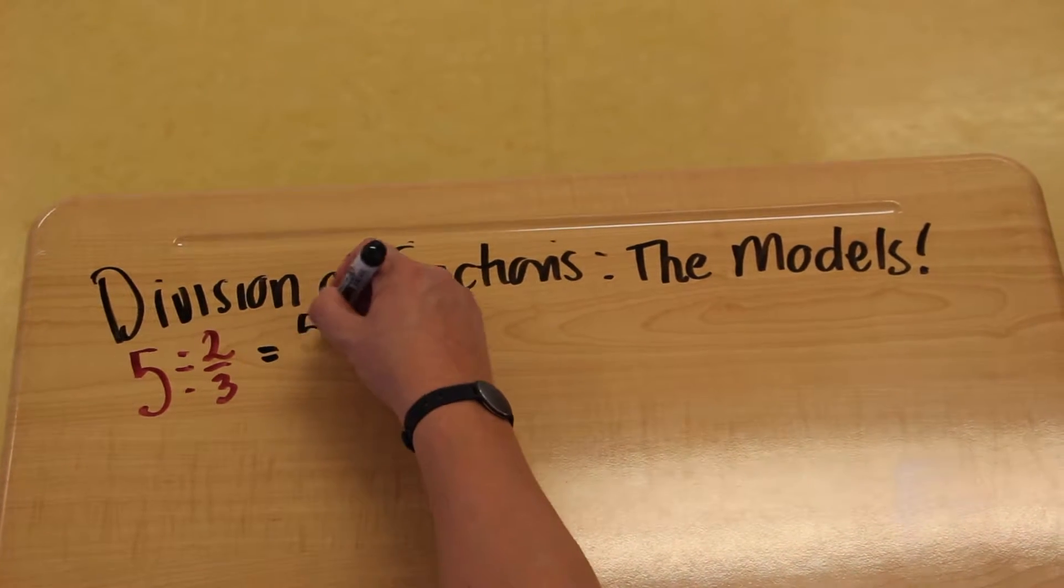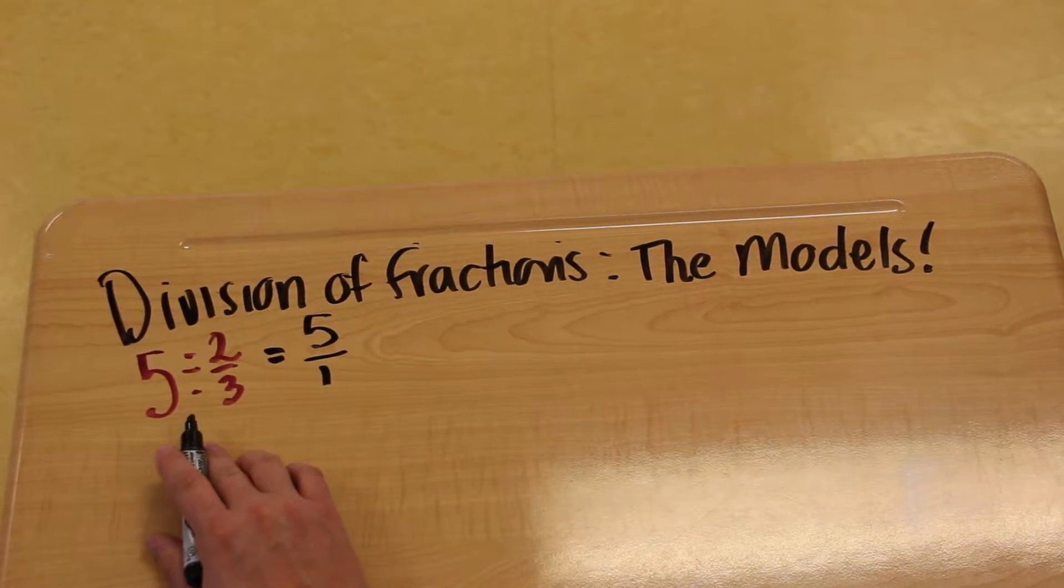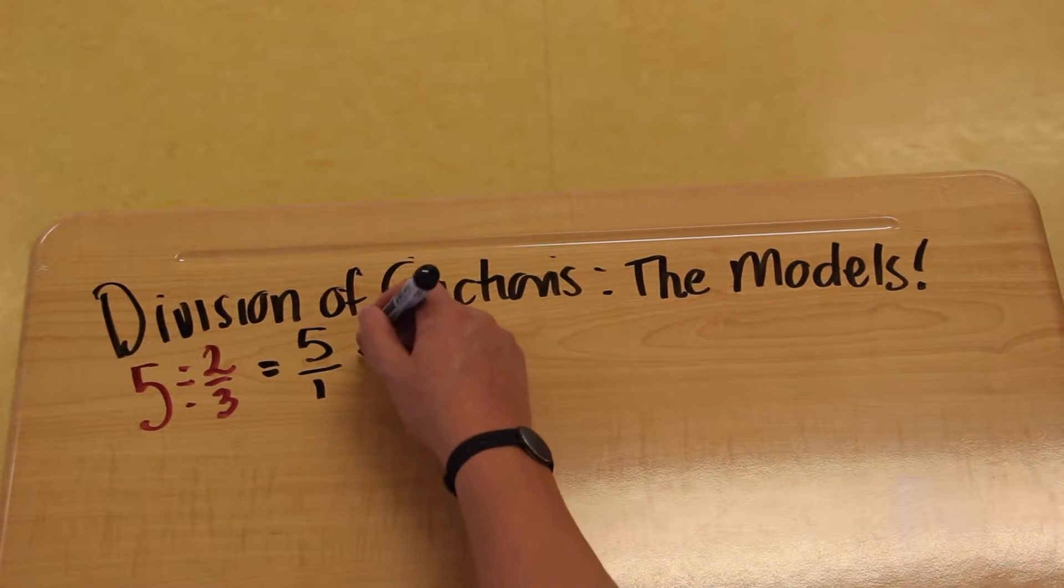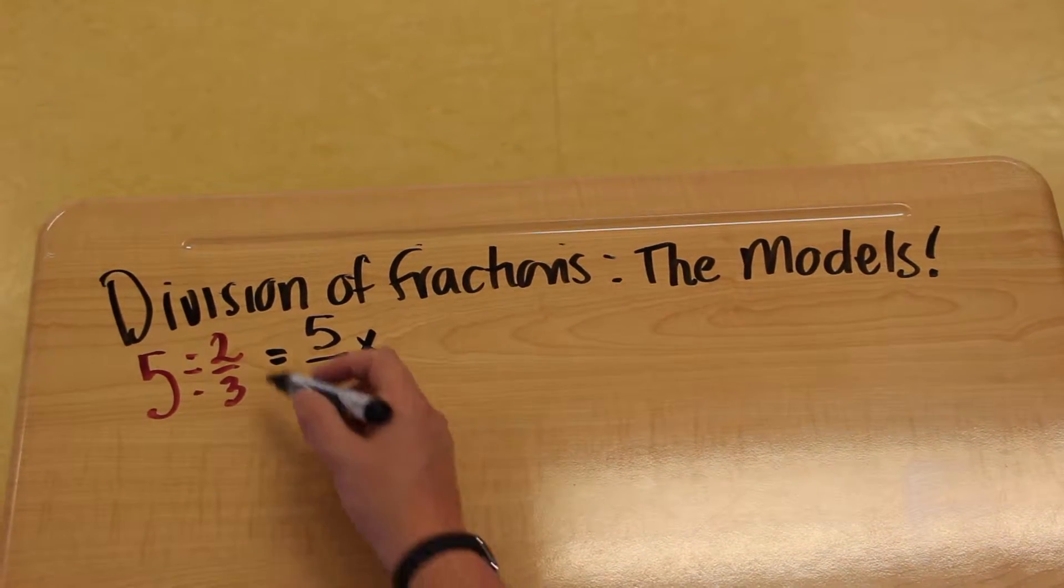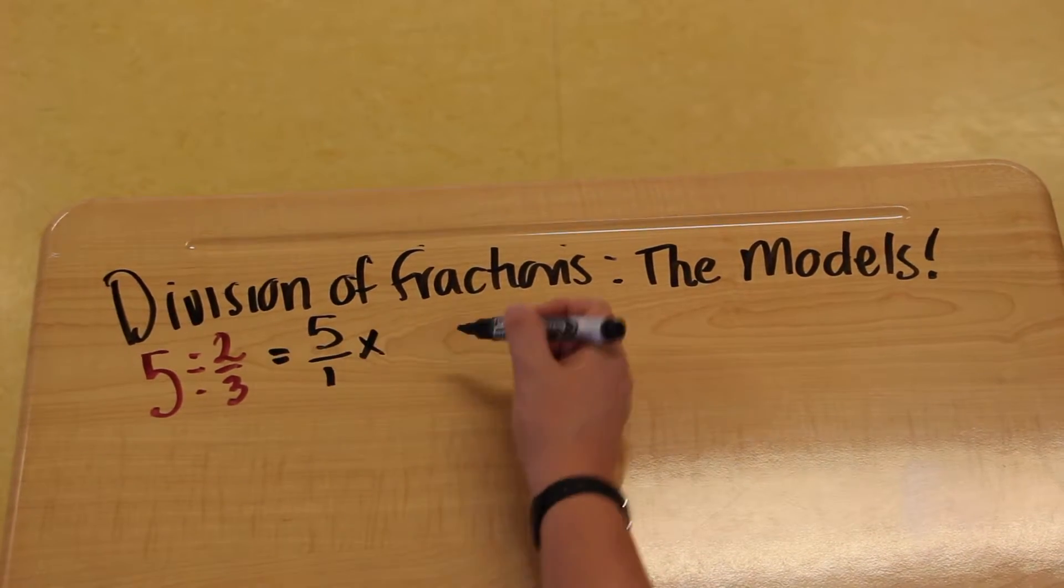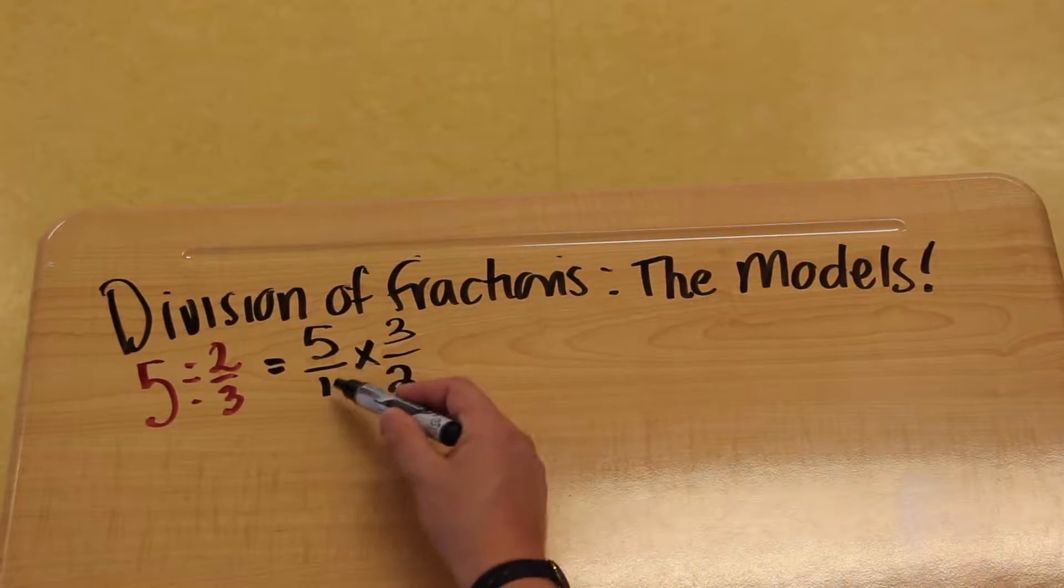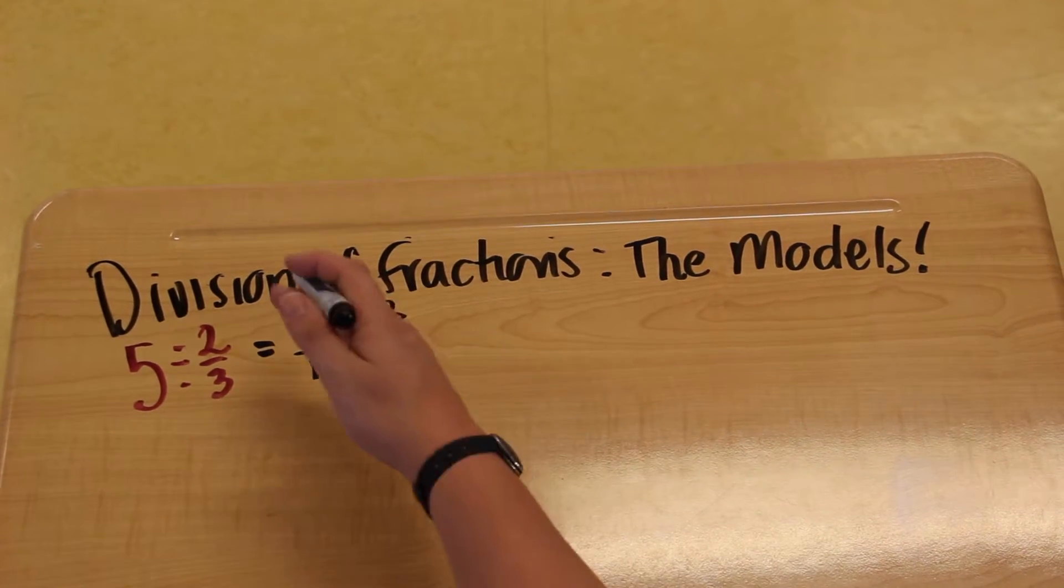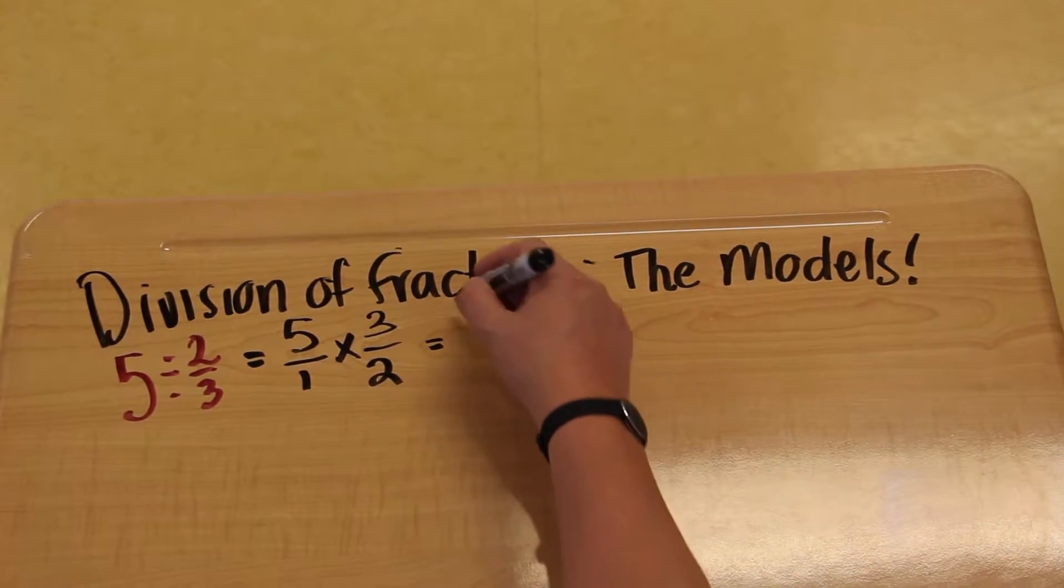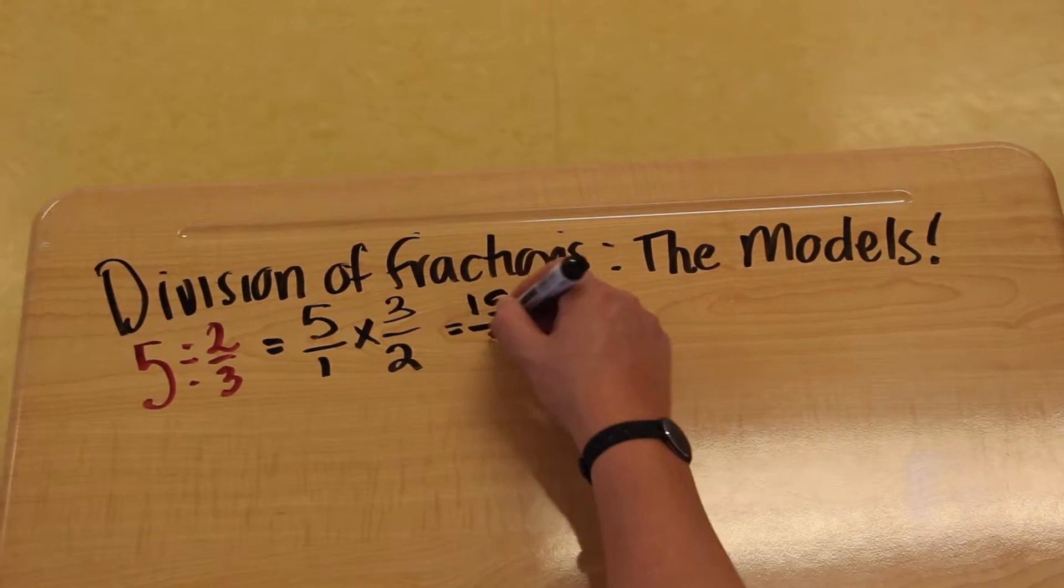So we're going to change this to 5 over 1. Remember when we are using the reciprocation model, we convert that to a multiplication question and flip the second fraction. So my new question becomes 5 over 1 times 3 over 2. I check to see if anything can be simplified across. Nothing can, so that ends up being 15 over 2.